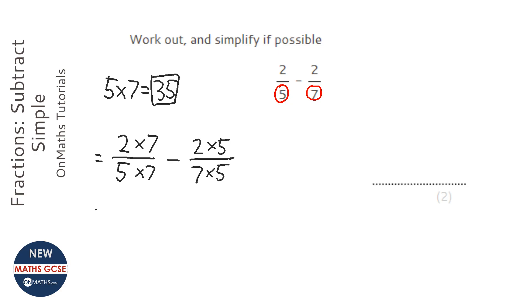And I've just rewritten the question. So I'm going to times the top, so what is it, 2 times 7, 14, over 35. And this becomes 10 over 35.